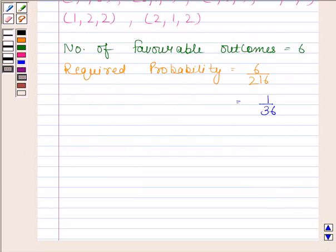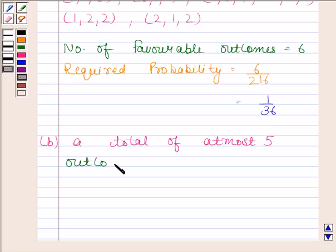Let's now move on to the B part. In B part, we have to find the probability of getting a total of at most 5. Now, outcomes favorable to this event are